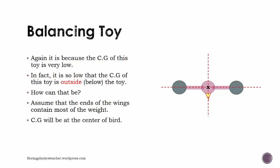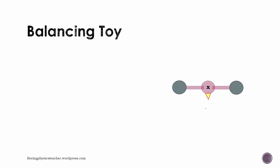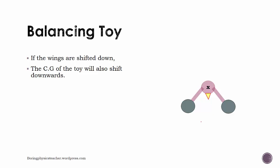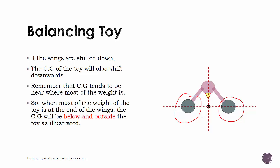If the wings are actually shifted down to this configuration, you find that the center of gravity of the toy will also shift downwards, since the center of gravity will actually follow where the majority of the weight is. You find that the center of gravity will actually shift downwards, and you realize that this particular center of gravity is actually outside the toy bird itself. When most of the weight of the toy is at the end of the wings, the center of gravity would in this case be below and outside the toy as illustrated.